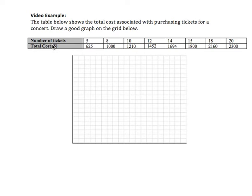So input is number of tickets and I am going to write that here, number of tickets, and then the output or vertical axis is the total cost in dollars. I'm going to put that right there.